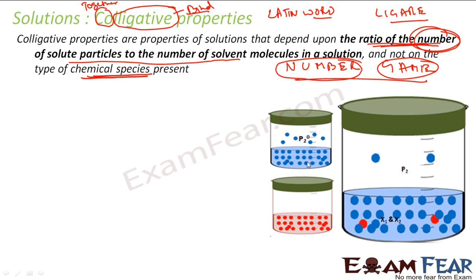These properties depend only on the number of solute particles or the solvent particles. They don't care about the chemical species or the chemical properties of solute and solvent particles. They are called colligative properties because they bind together, and this colligative property differs depending on the binding.